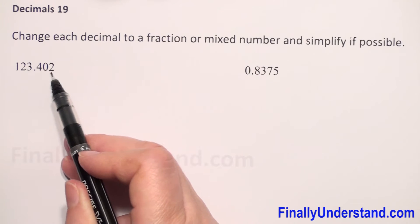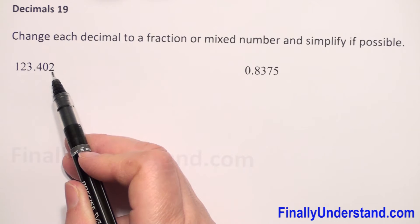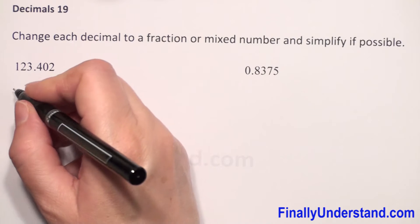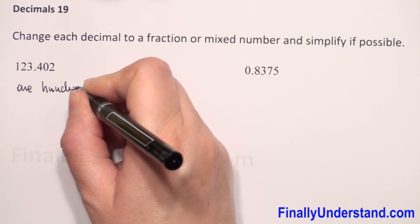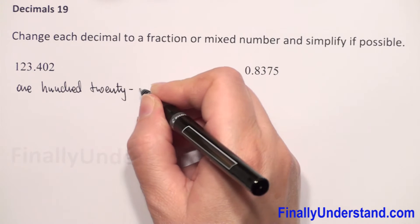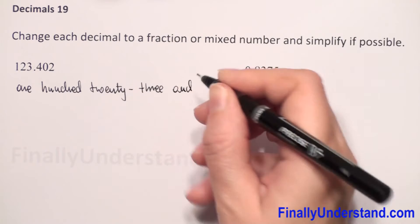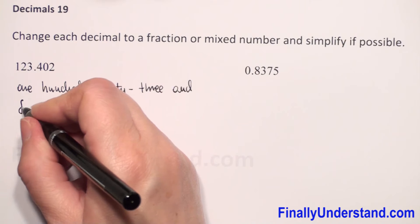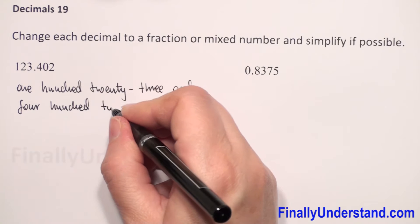We have three digits after the decimal point: tenths, hundredths, and the next is thousandths. So we write 123 and, after the decimal point, 402 thousandths.